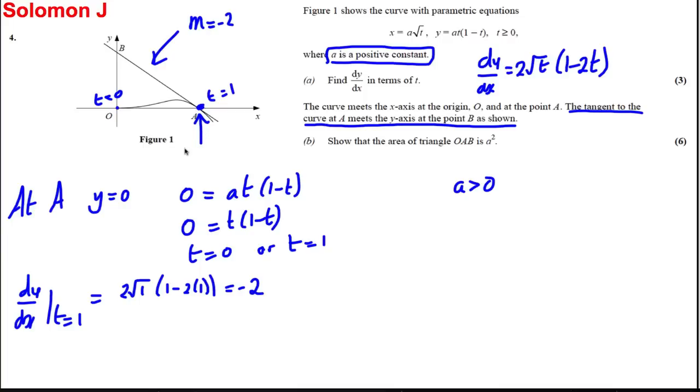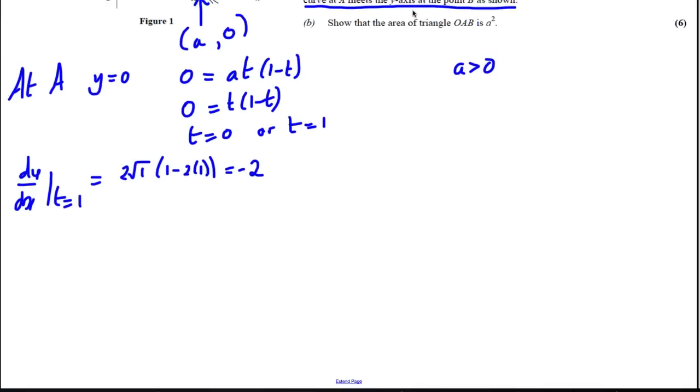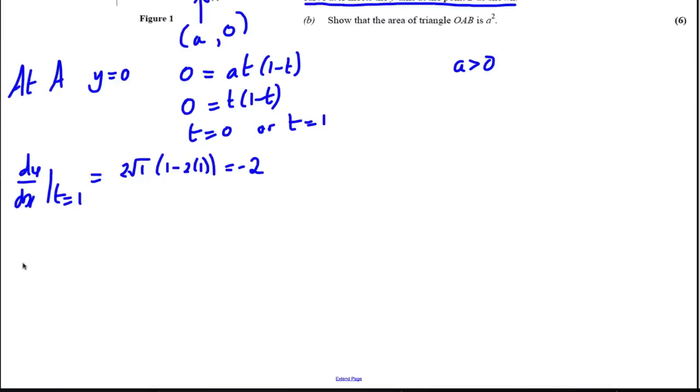We know a point on the line. At that point y equals 0, and the x value when you put t = 1 is going to be equal to a. So at A the coordinates are (a, 0) when t equals 1.